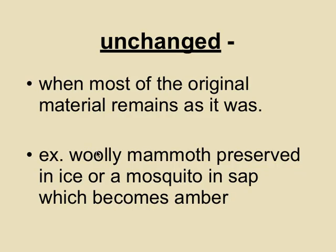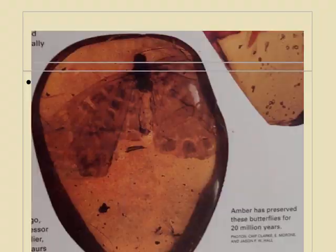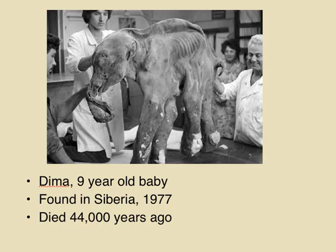The fourth type is unchanged, where most of the original material remains as it was — like a woolly mammoth preserved in ice. There's some great examples in your book. Here's a moth in a chunk of amber tree sap, 20 million years old. Here is an old elephant 44,000 years ago, found in Siberia, basically frozen the whole time.